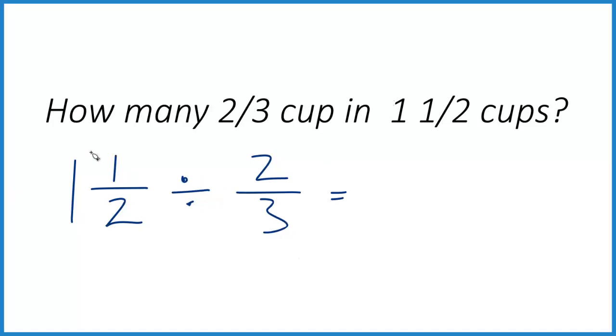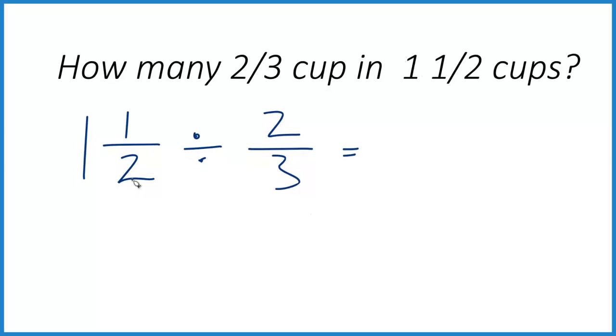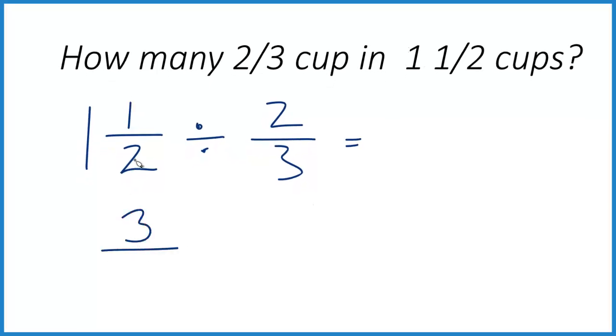The problem is we have this mixed number here. So let's see if we can get this in the same format as our two-thirds here. So one times two is two, and two plus one is three. So we have three, and we keep the two the same. So one and a half, it's the same value as three over two. They're both equal to 1.5. But now we have the same format here.